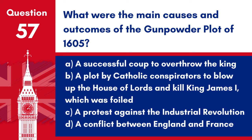Question 57: What were the main causes and outcomes of the Gunpowder Plot of 1605? a. A successful coup to overthrow the king. b. A plot by Catholic conspirators to blow up the House of Lords and kill King James I, which was foiled. c. A protest against the Industrial Revolution. d. A conflict between England and France. Answer: b. The Gunpowder Plot was an attempt by a group of Catholics to provoke a rebellion by assassinating the Protestant King James I, but the plot was discovered before it could be executed.